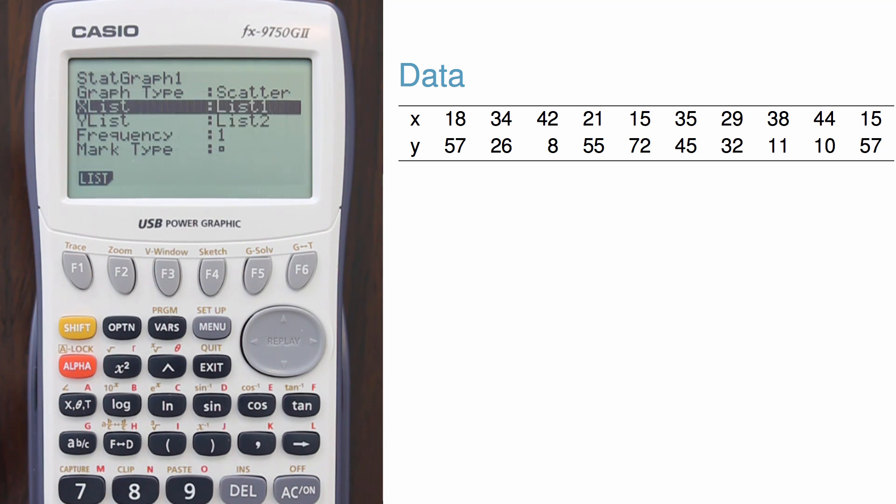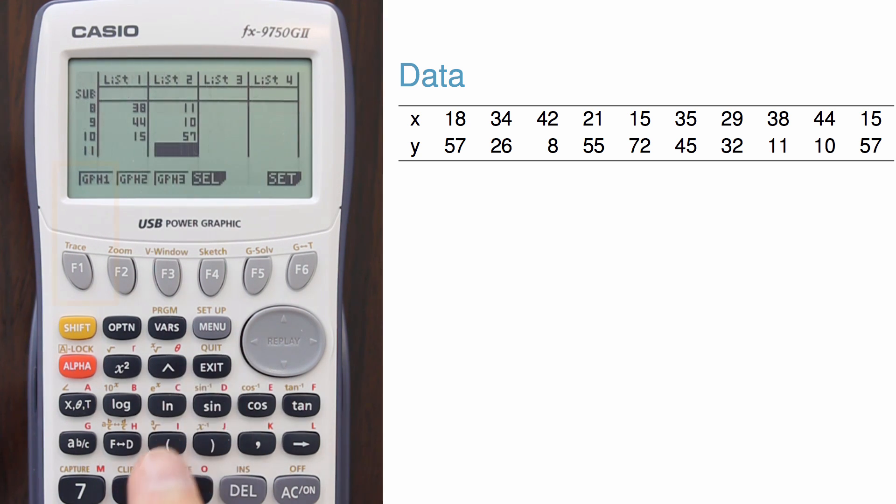I find it easier to always enter my data into list 1 and list 2, and that way I don't need to update this each time. But if you do occasionally use other lists, verify the proper lists are always set for whatever calculations or graphing you're going to do. Now I can exit out and show graph 1.